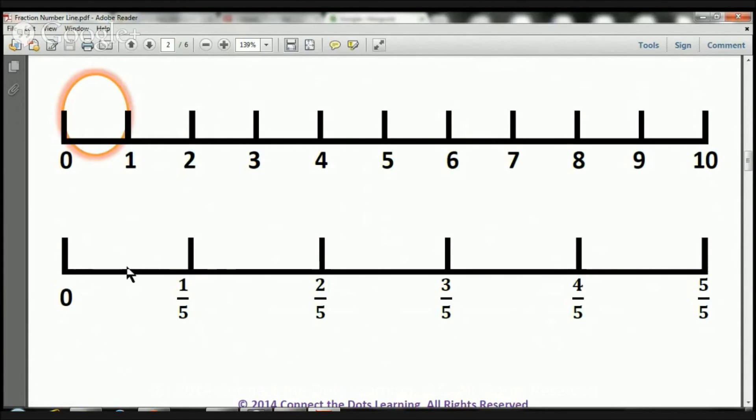So from zero all the way up until this point here, there's only one piece there, that's one fifth. From zero all the way to this piece here, there's one, two pieces. That's going to be two fifths. From zero all the way to this piece here, there's one, two, three. That's going to be three fifths. And from zero all the way to this piece here, there's one, two, three, four, five. That's going to be five fifths, which is equal to one, right? Zero to one.